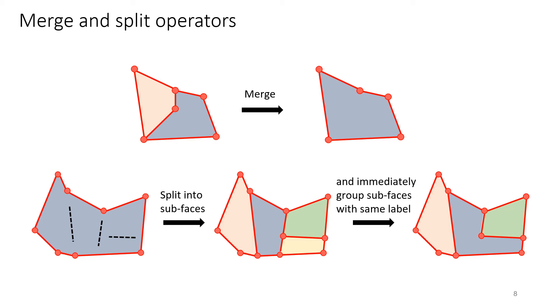The merge operator simply merges two adjacent faces by removing common edges. The split operator first detects a set of line segments which are prolonged to segment the face into sub-faces. Adjacent sub-faces with the same semantic label are immediately merged.